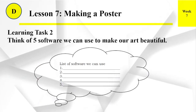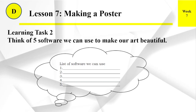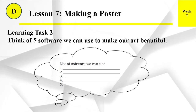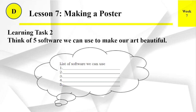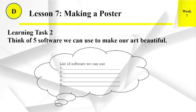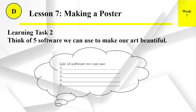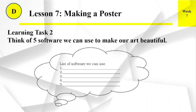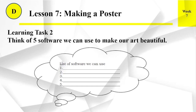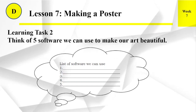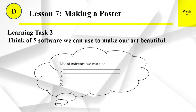Learning Task number 2. Think of 5 software we can use to make our beautiful art — that is number 1 to number 5. List the software we can use to make our art beautiful.